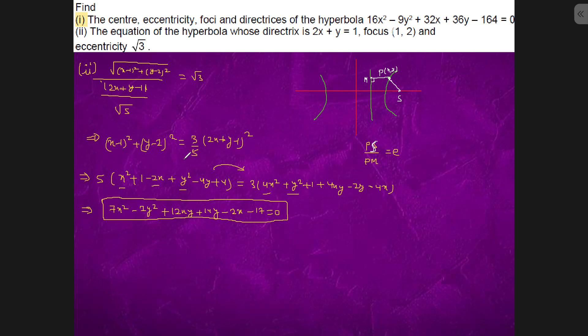If we cross multiply 5 and 3, it will become 5 times x squared plus 1 minus 2x, plus y squared minus 4y plus 4.